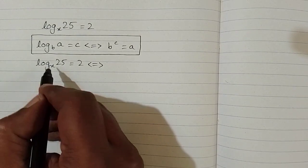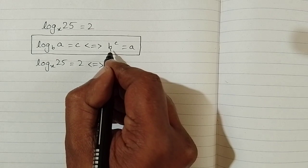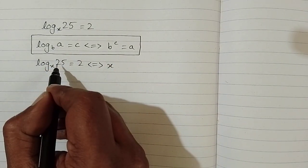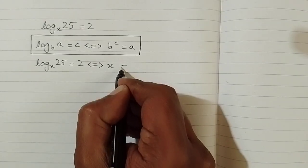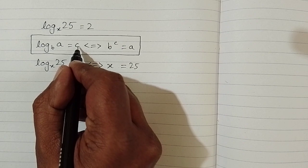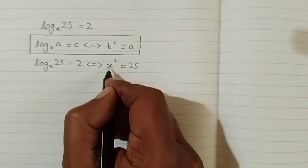We can see that we have x in place of b, so we will write x here in place of b. In place of a we have 25, so we will write 25 in place of a. The value of c is 2, so we can write 2 as a power of x.